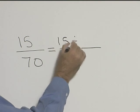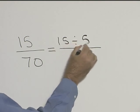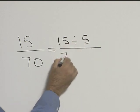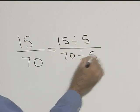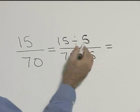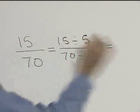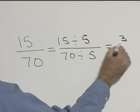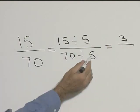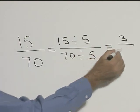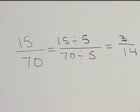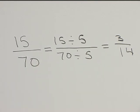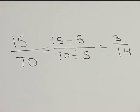So let's take 15 divided by 5, and 70 divided by 5. 5 goes into 15 three times. 5 goes into 70 14 times. So the fraction 15/70 reduces to 3/14.